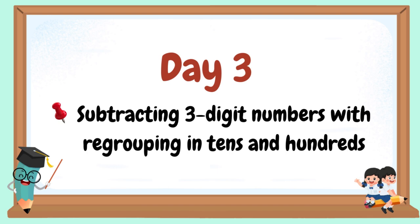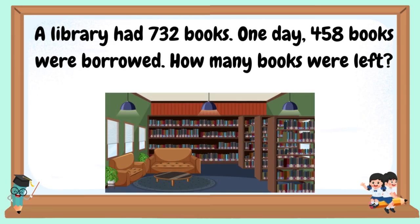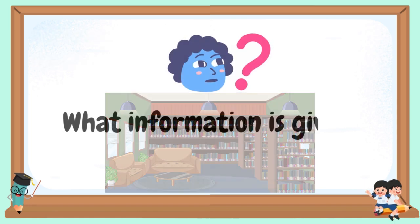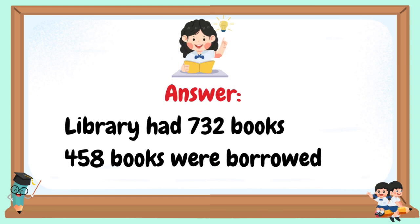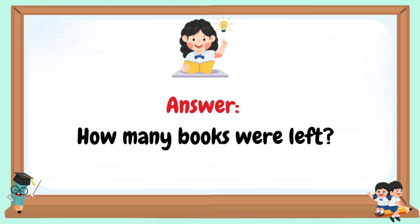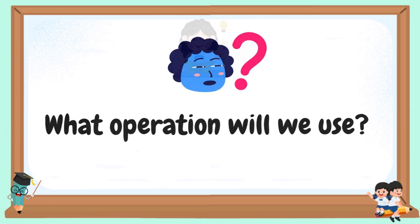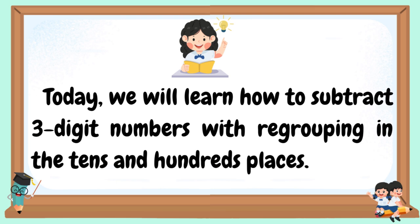Welcome to our day 3: subtracting 3-digit numbers with regrouping in the 10's and 100's. A library had 732 books. One day, 458 books were borrowed. How many books were left? What information is given? The library had 732 books and 458 books were borrowed. What do we need to find? How many books were left? What operation will we use? Subtraction. Today, we will learn how to subtract 3-digit numbers with regrouping in both the 10's and 100's places.